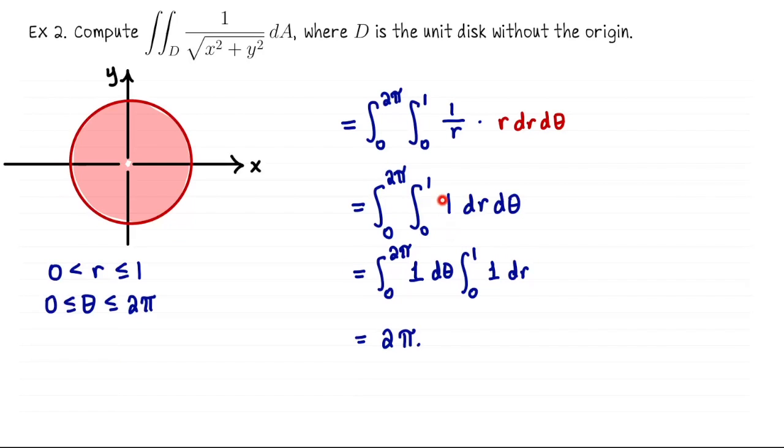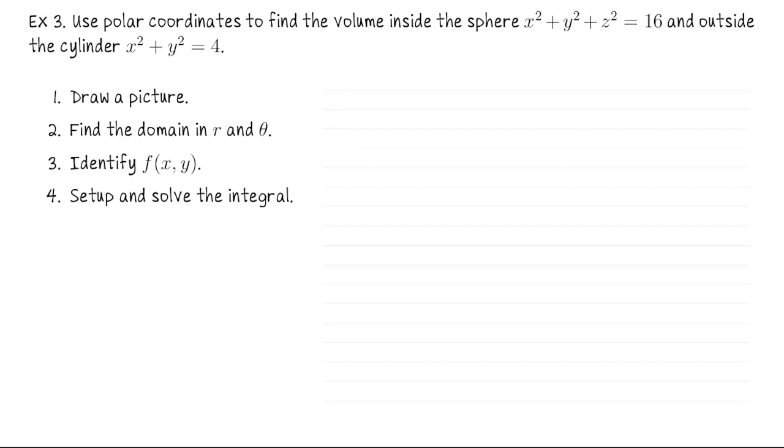These choices I make where I take this double integral and I split it into a product of single integrals, whenever that property of integration applies, it's just a choice I make. So from the second line, what you could do is anti-differentiate with respect to r, plug in 1, subtract off plugging in 0, and then anti-differentiate with respect to theta. That's totally fine.